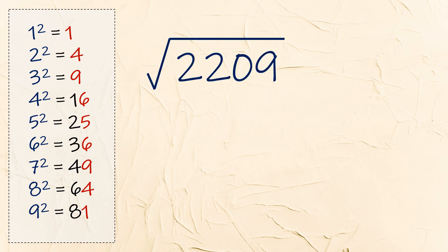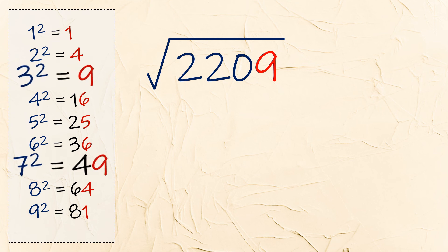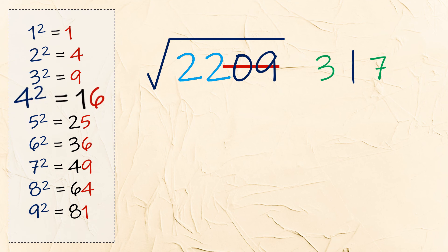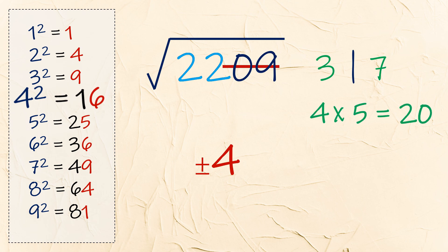Let's have the square root of 2209. The last digit is 9, so we have 3 and 7. Cross out the last two digits — now we have 22. The number closest to 22, which is under 22, is 16. So 4 is the first digit. Multiply it by the next number, 5 — we get 20. Since 22 is greater than 20, we use 7. The answer is positive and negative 47.